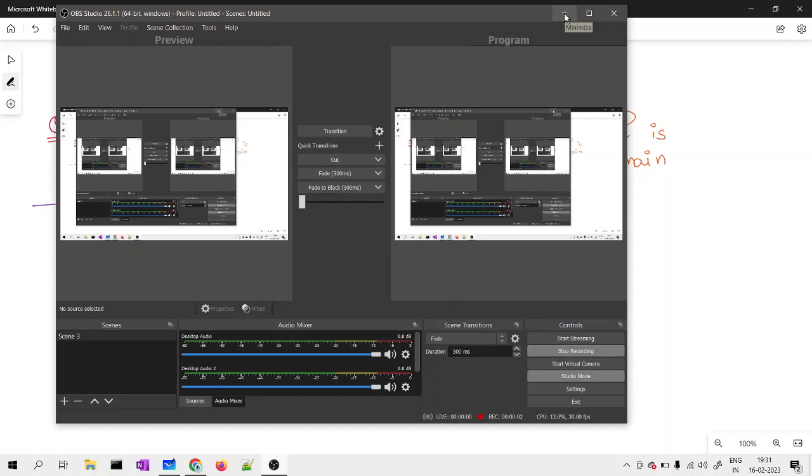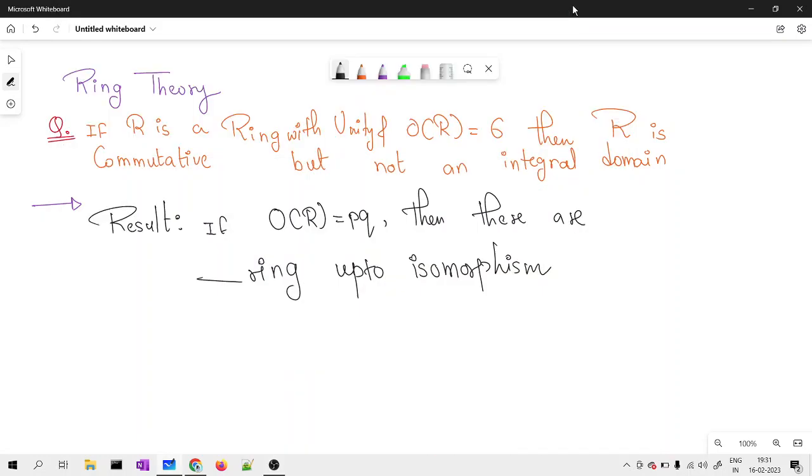Hello dear friends, welcome to this video. In this video we will be discussing a problem of ring theory where R is a ring with unity and the order of R is 6, that means there are 6 elements. We will be discussing whether it is commutative but not an integral domain.